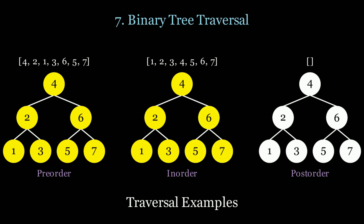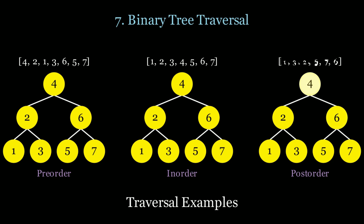In the post-order traversal, we scan the children before the node. That's going to be 1, 3, 2, 5, 7, 6, and finally 4.